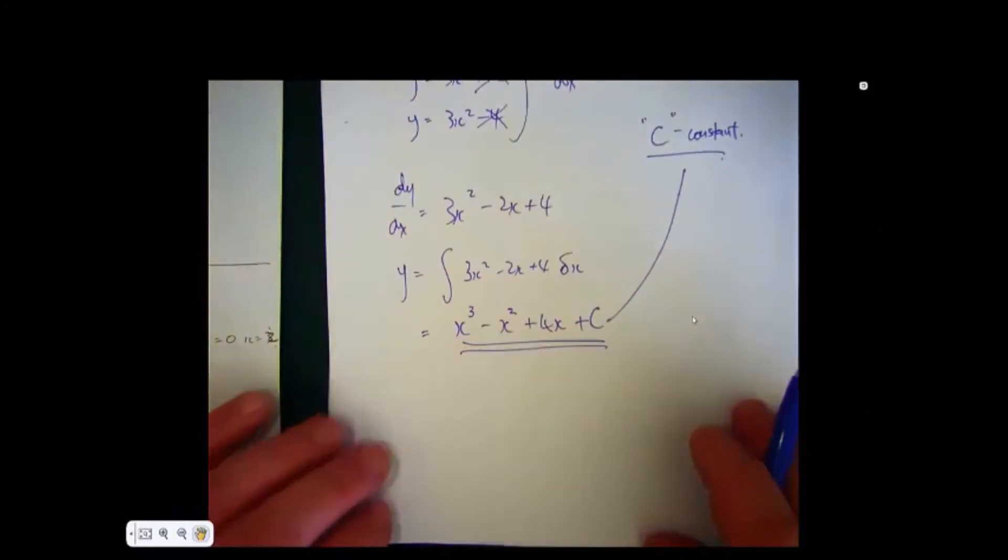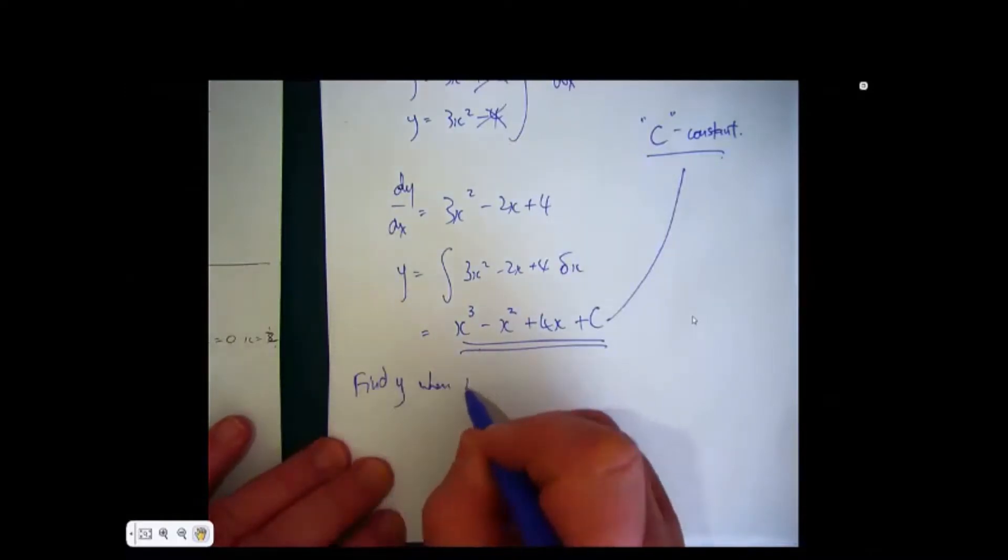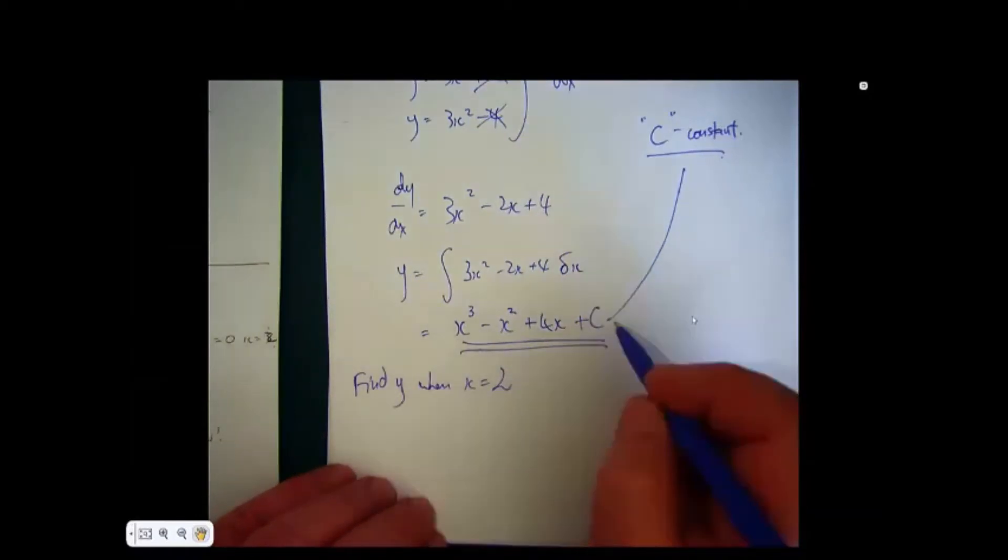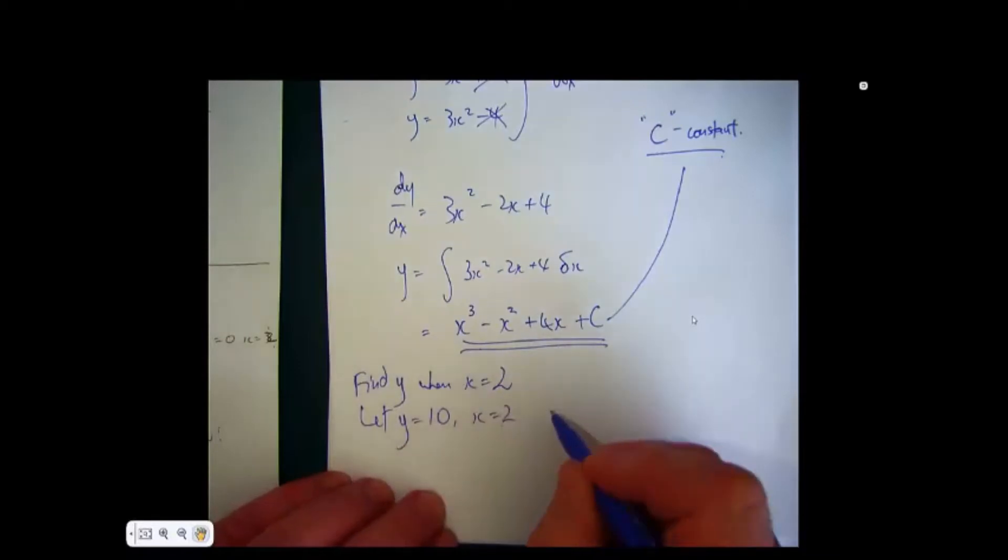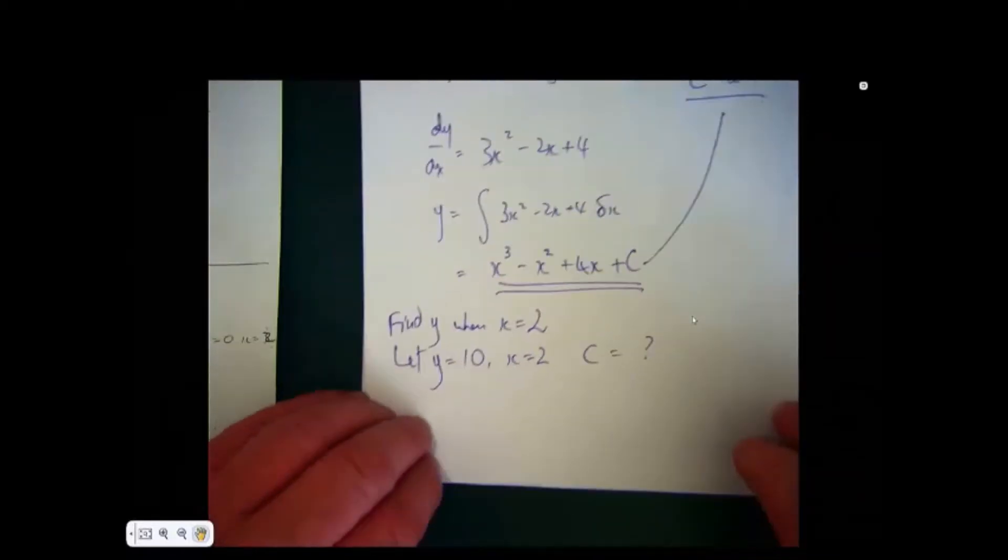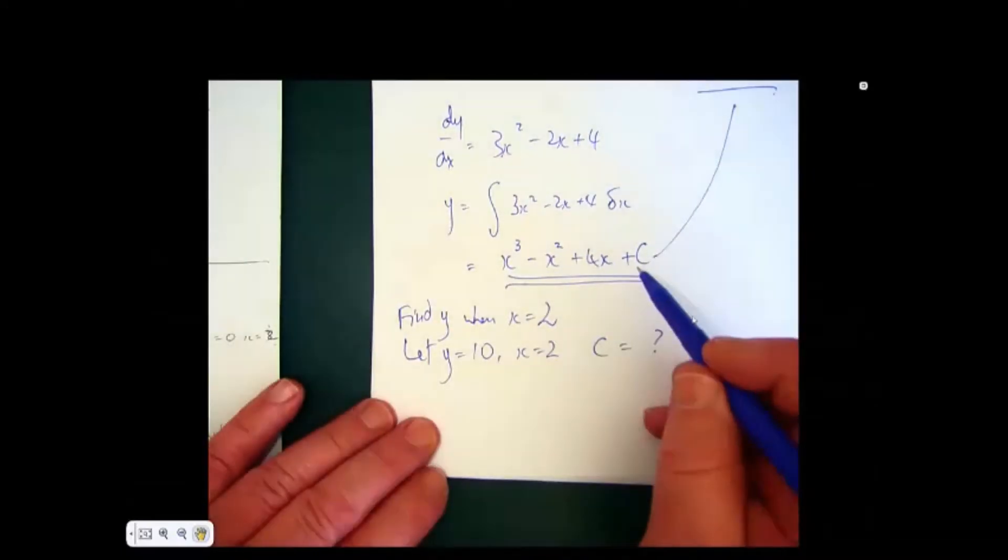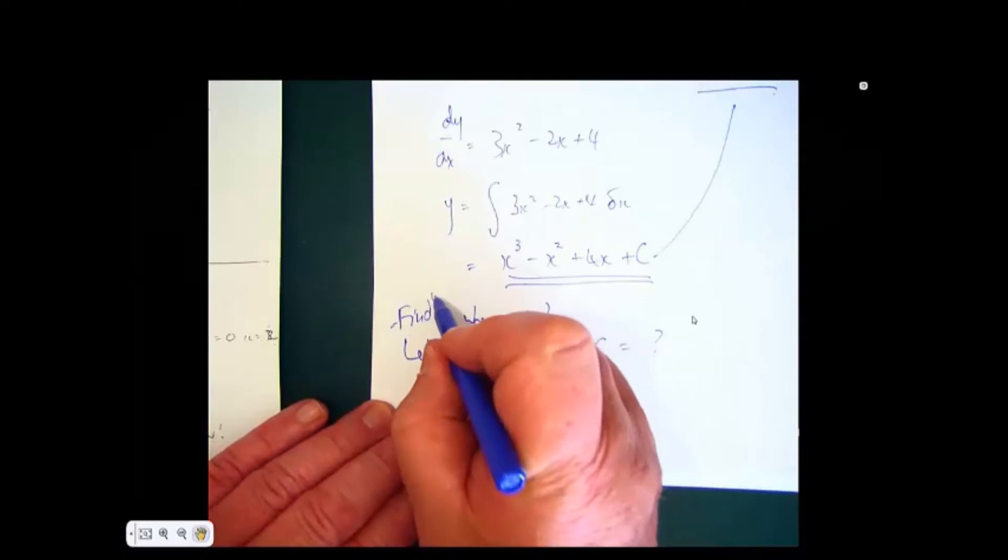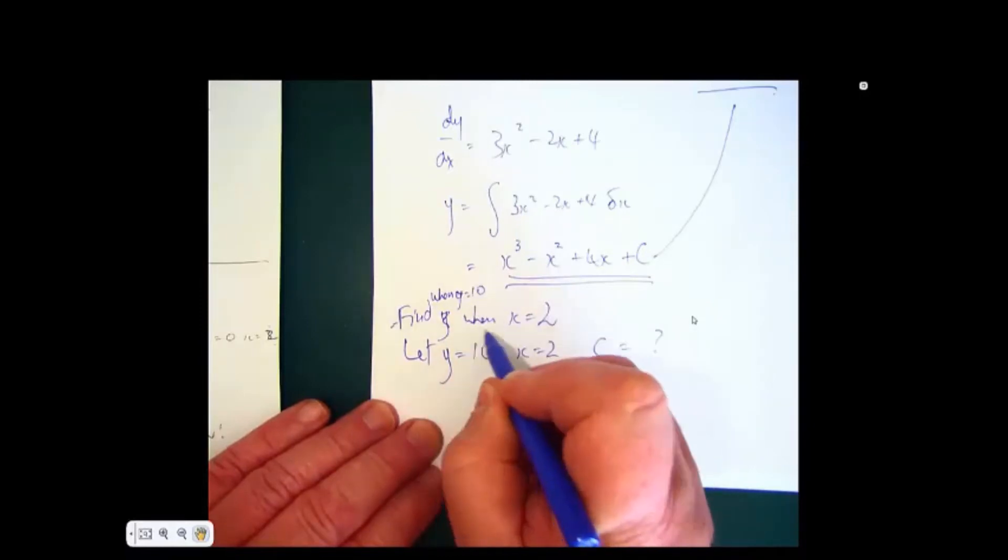Now, an examiner might then say, can you find y when x equals 2? Or you need to find what c is, so he'd probably say, let y equal 10, x equal 2, and then will c equal a particular value? Now you have a value for y, you have a value for x, we can find c. So let's just reiterate that one. Find when y equals 10, x equals 2, what will c equal?